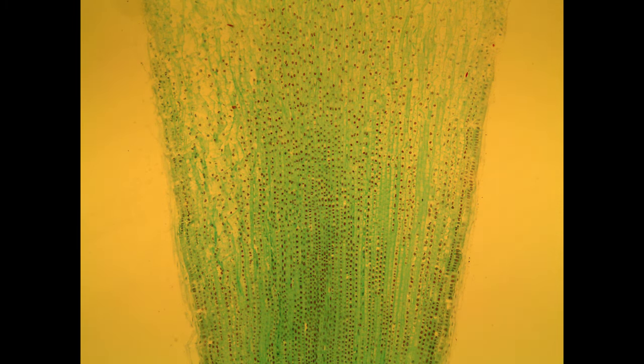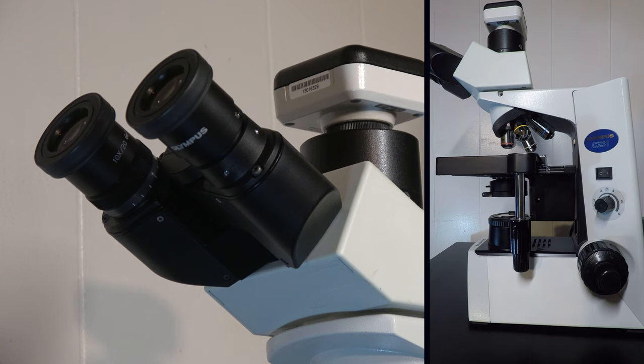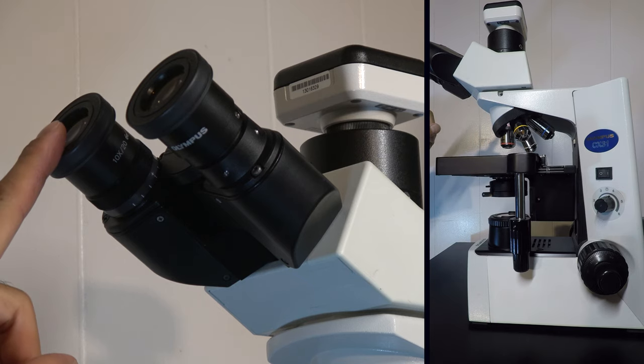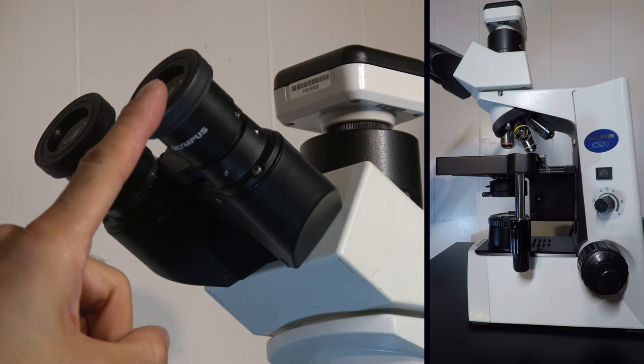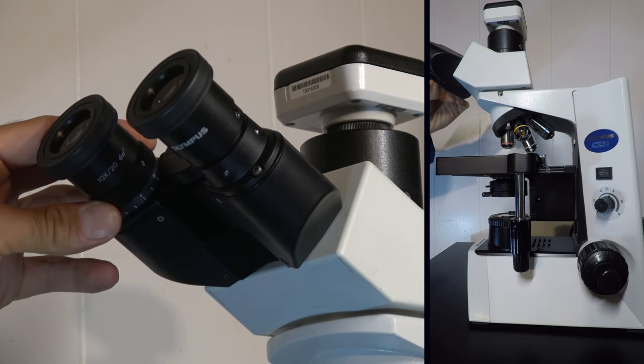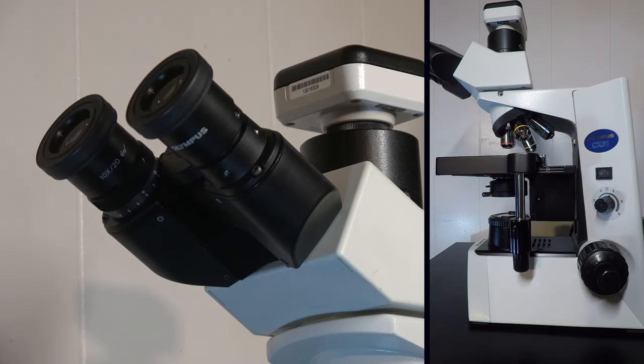Next, we should tune the scope to correct for differences in acuity between each of your eyes. On this scope, we would close our left eye and get the image into focus on the right eye using the fine focus knob. Then close the right eye and rotate the left eyepiece so that your view through the ocular is focused.